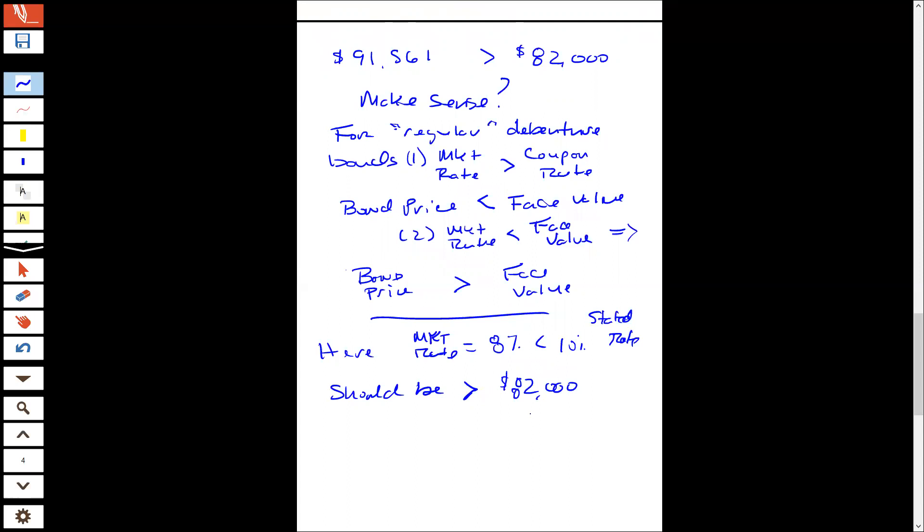So always be aware of that relationship. Generally, when bond rates go down, prices go up. But in particular, with these debenture bonds that pay interest only, we know explicitly that when the market rate is below the coupon rate, then the bond price should be above the face value. When the market rate is above the coupon rate, then the bond price should be below the face value.